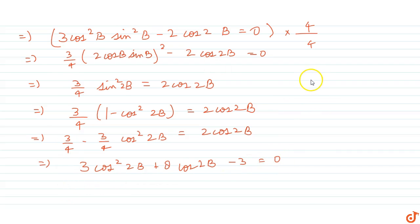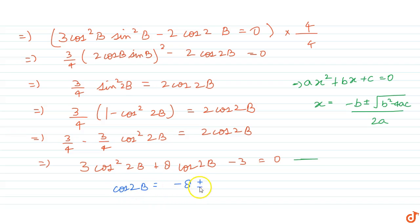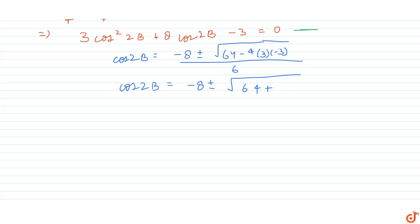Now consider this as a standard quadratic equation ax² + bx + c = 0. The roots are given by x = (−b ± √(b² − 4ac)) / (2a). Comparing, cos(2b) = (−8 ± √(64 + 36)) / 6 = (−8 ± √100) / 6 = (−8 ± 10) / 6. This gives cos(2b) = 1/3 or cos(2b) = −3, so we take cos(2b) = 1/3.